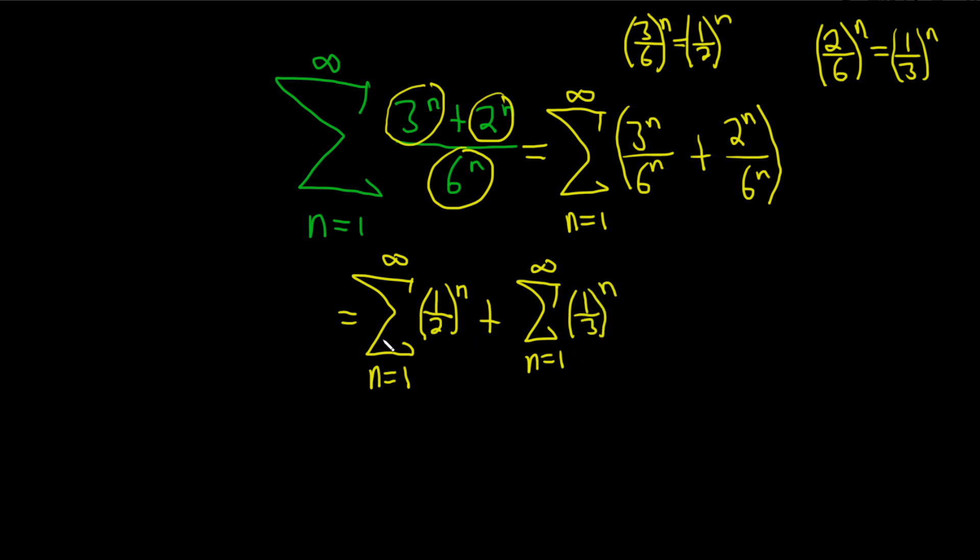So both of these series are called geometric series, and that's because they have the general form a times r to the n. Some books use n minus 1 instead of n. It doesn't make much of a difference. And in a geometric series, there's something called the geometric series test, GST.